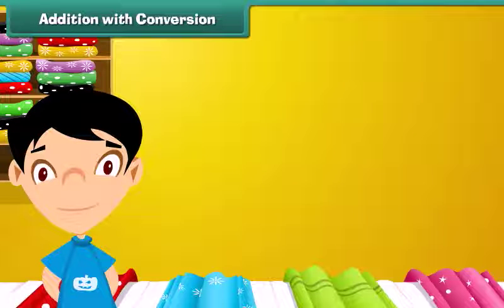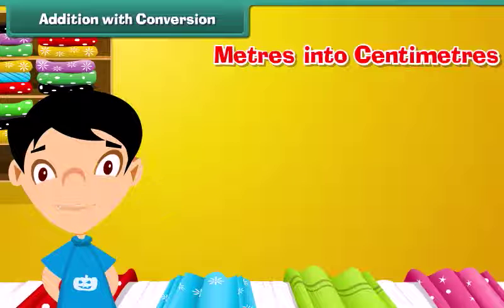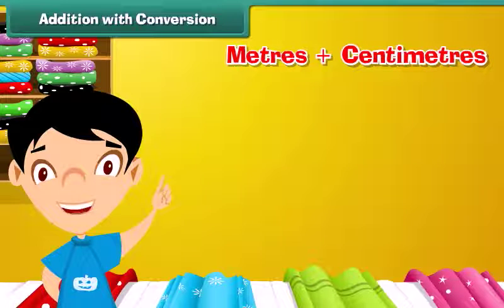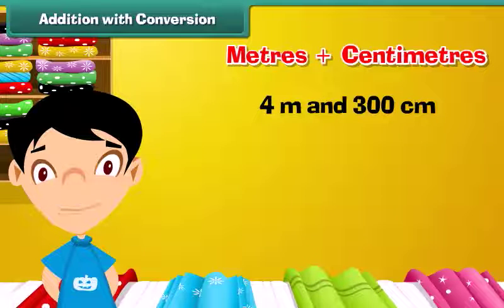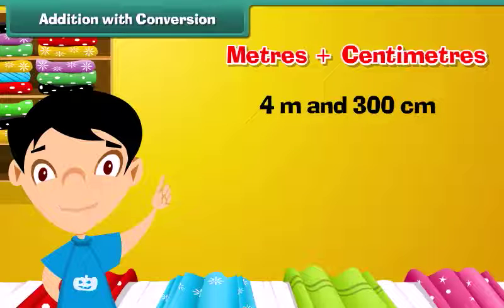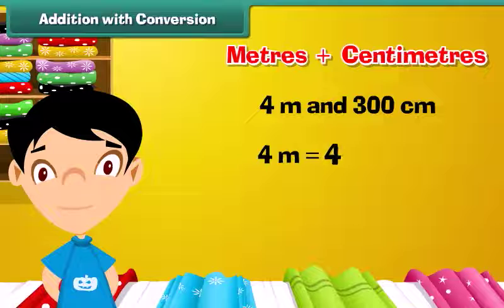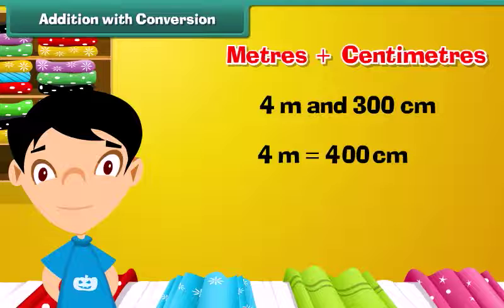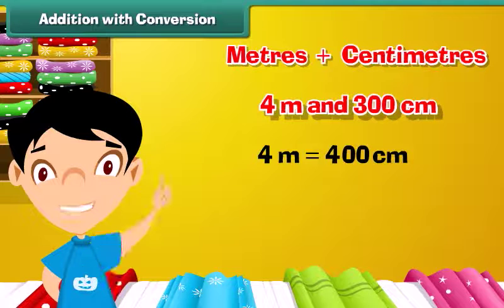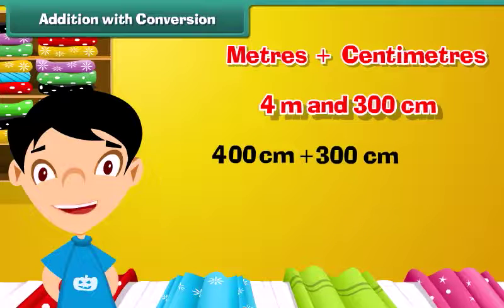Addition with conversion: Now that we know how to convert meters into centimeters, let us add meters and centimeters. Let us add 4 meters and 300 centimeters. First, convert 4 meters into centimeters: 4 into 100 equals 400 centimeters. So, 4 meters plus 300 centimeters equals 400 centimeters plus 300 centimeters, which equals 700 centimeters.